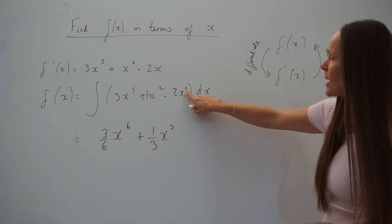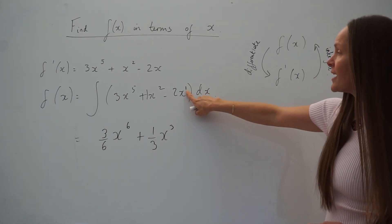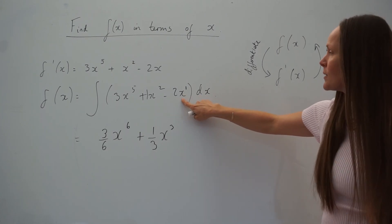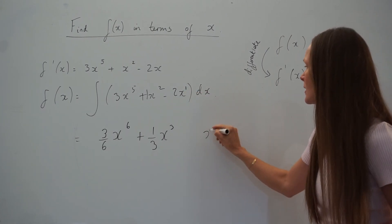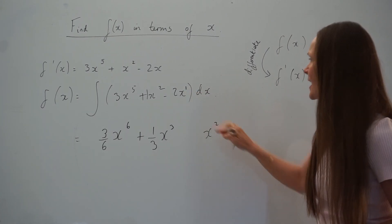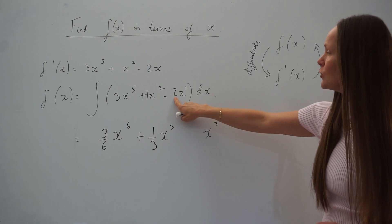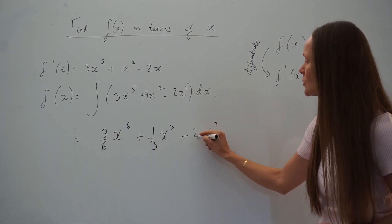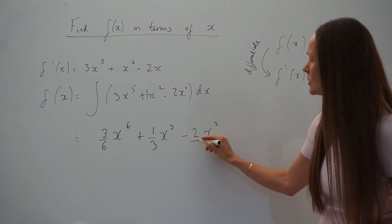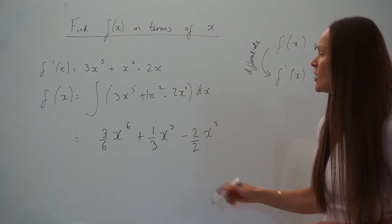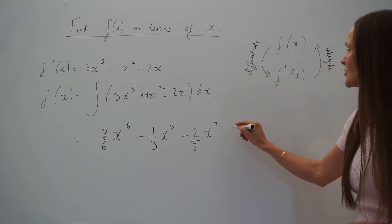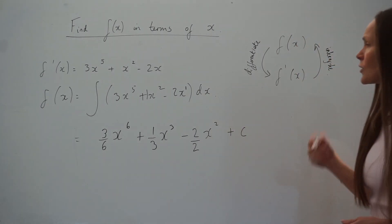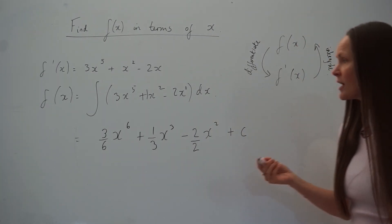Finally, this last term: minus 2x is the same as minus 2x to the power of 1 — we just don't write the power of 1. So if I raise this power by 1, we're left with x squared, and we're dividing the coefficient negative 2 by the new power, giving negative 2 divided by 2. And don't forget to add your constant c.